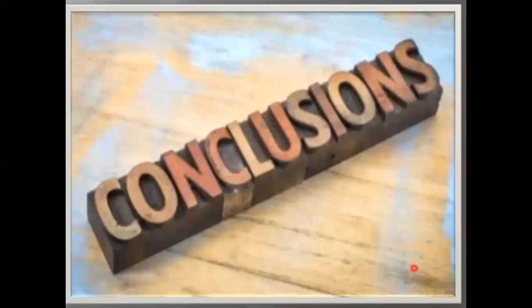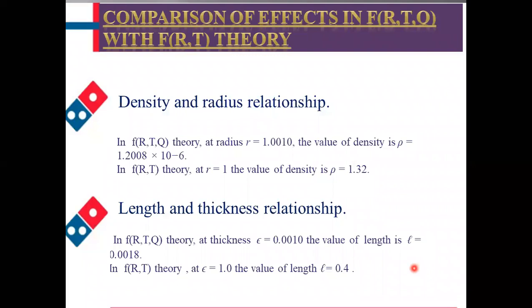Now the conclusions. I have compared all the results of the graphs with the work which has been done in f(R,T) theory. By comparing the results I have come to know that in f(R,T) theory, at r = 1 density is 1.32, but in my case at r = 1 density is 1.2×10⁻⁶. There is a negligible change in the density at the same values.